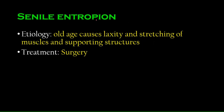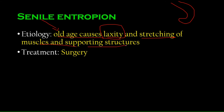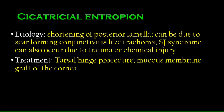Moving to entropion — bending towards the inside of the eyelids. Senile entropion is again caused by old age: laxity of certain structures, stretching of muscles and supporting structures. Old age causes all kinds of problems, and treatment is again surgery. Nothing complicated — simple stuff.